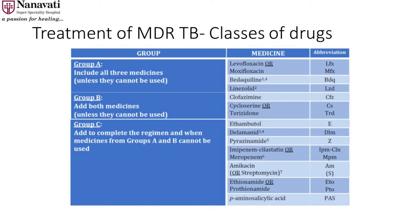Group B includes clofazimine and cycloserine. Group C includes delamanid, ethambutol, pyrazinamide, and injectables. The recommendation is that when devising a regimen you need at least five drugs that work — three from Group A (moxifloxacin, linezolid, bedaquiline), two from Group B (clofazimine, cycloserine), and if you can't make five from Groups A and B, then use any drug from Group C to complete a regimen of five drugs.